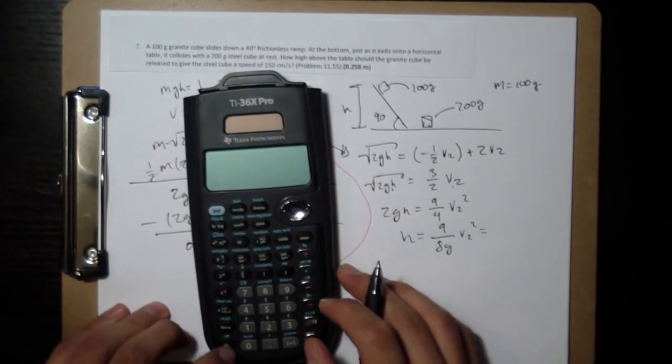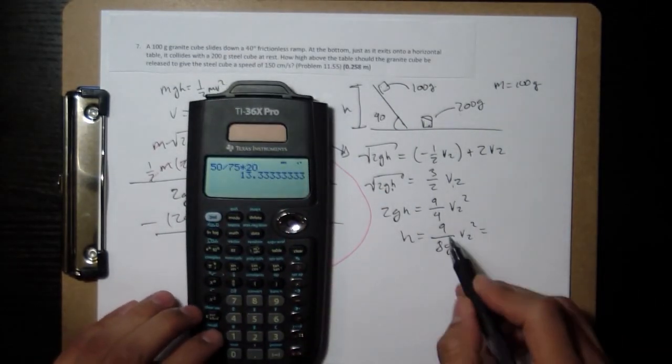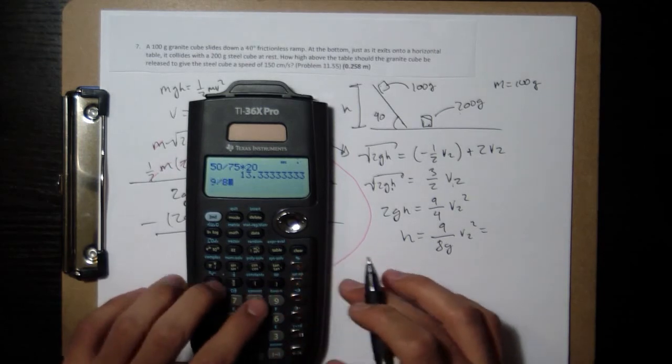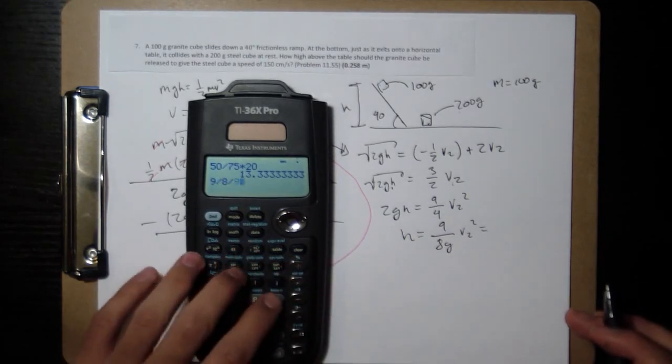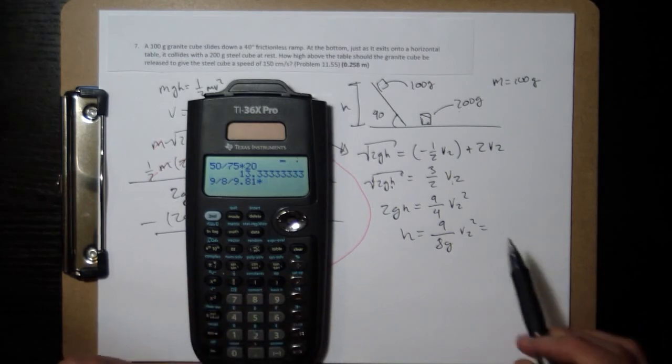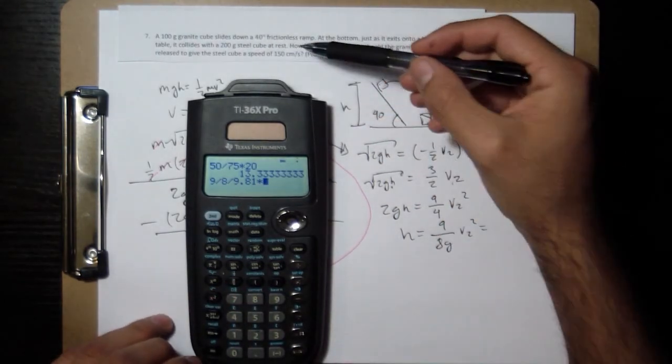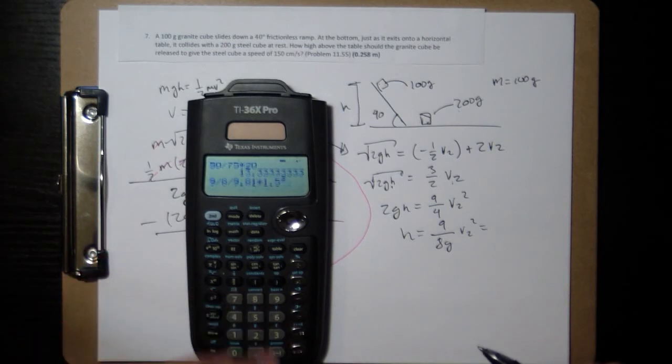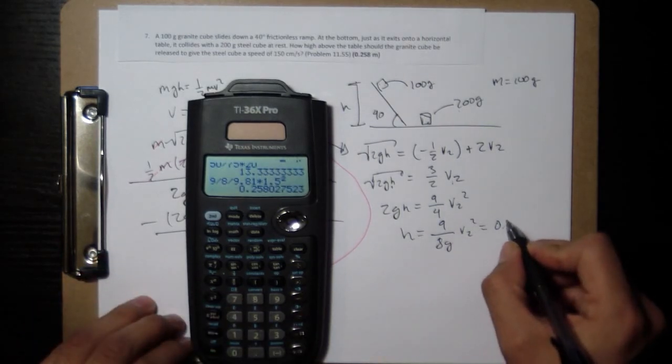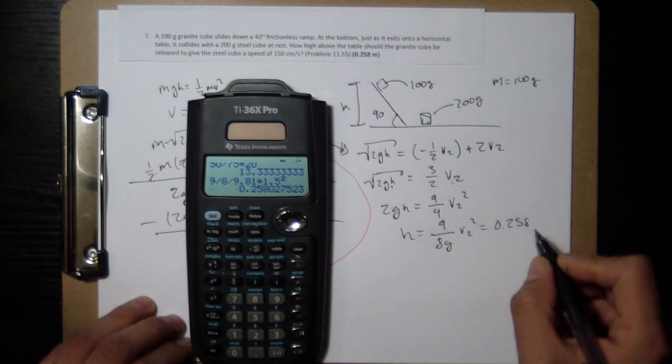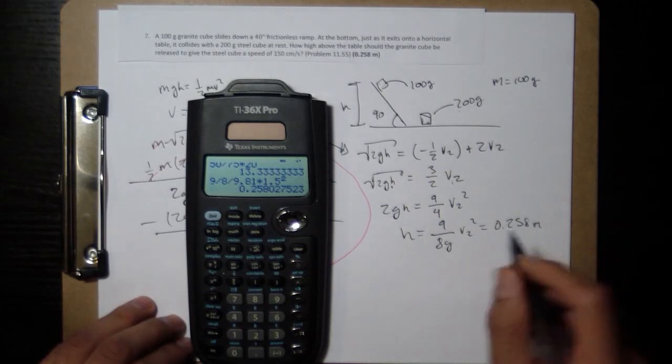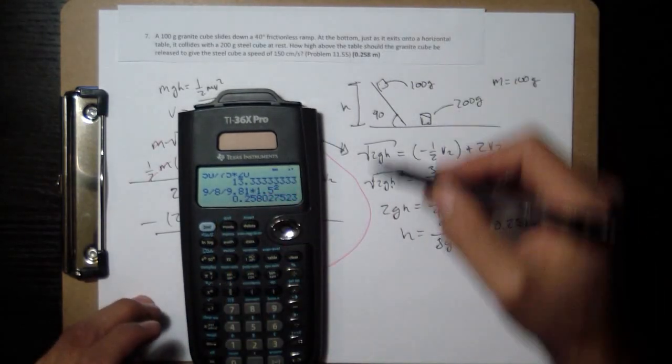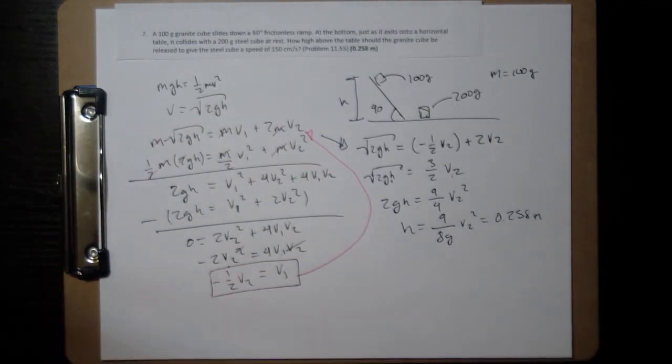9 over 8 over g times, and the speed that we want is 150 centimeters per second, so it's 1.5 meters per second. 0.258 is the height. It's in meters. And that's what we have for our answer. And that's it. Done.